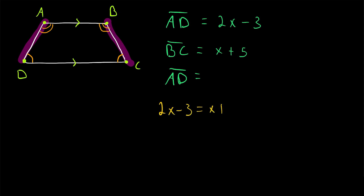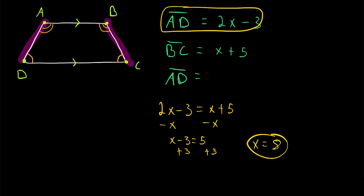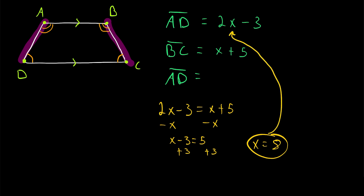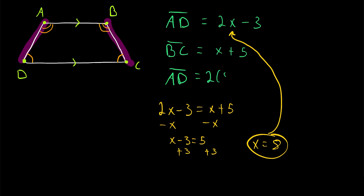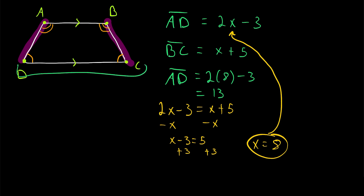So we have 2x minus 3 equals x plus 5. Subtracting x from both sides gives x minus 3 equals 5, then adding 3 to both sides gives x equals 8. To find the length of AD, we plug x equals 8 into that expression: AD equals 2 times 8 minus 3, which equals 16 minus 3, which is 13. Notice that since AD and BC are congruent, plugging x equals 8 into the other expression also gives 8 plus 5 equals 13.